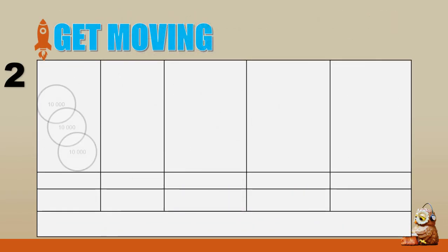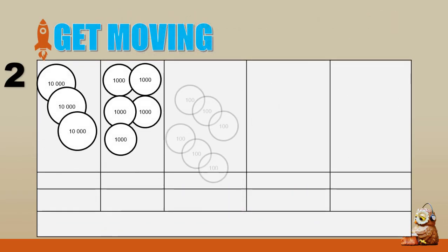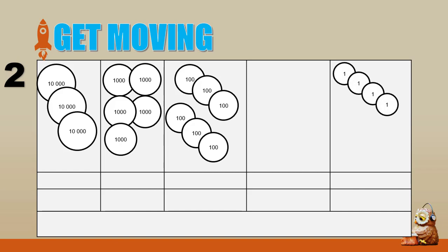Let us have another example. At this moment, number disks are already given, and our task is to find out what the number is. Now let's begin to solve the problem. Let's start from the right side of the table. Let us see how many disks are in the 1's, 10's, 100's, 1000's, and 10,000's place.